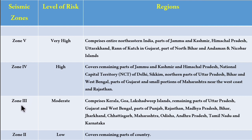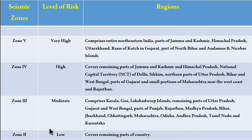Zone 3 has a moderate level of risk and comprises Kerala, Goa, Lakshadweep Islands, remaining parts of Uttar Pradesh, Gujarat and West Bengal, parts of Punjab, Rajasthan, Madhya Pradesh, Bihar, Jharkhand, Chhattisgarh, Maharashtra, Odisha, Andhra Pradesh, Tamil Nadu and Karnataka. Zone 2 has very low earthquake effect and covers the remaining parts of the country.